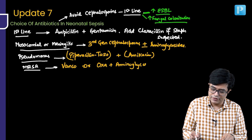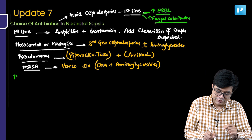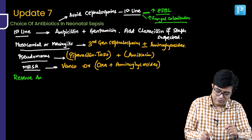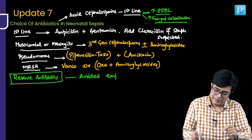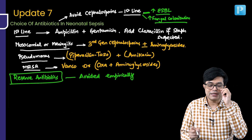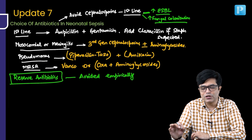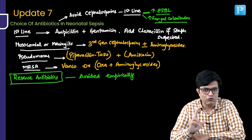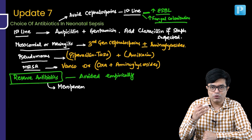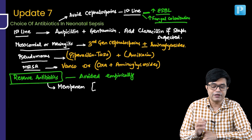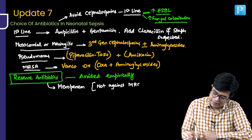This is mentioned in the IMS protocol. There are some antibiotics considered reserve antibiotics — these should not be given empirically. Reserve antibiotics are used only if there is a culture sensitivity report, or if there is an ICU outbreak with proven resistant pathogens. Reserve antibiotics include meropenem, which is highly effective against gram-positive, gram-negative, and anaerobes, but it is not effective against MRSA and enterococci.